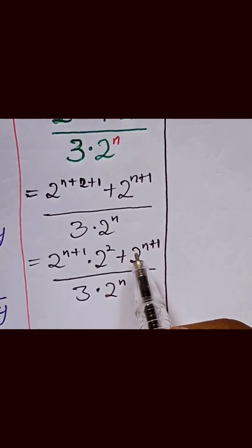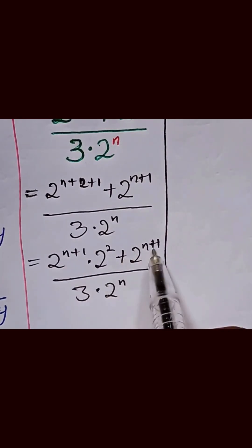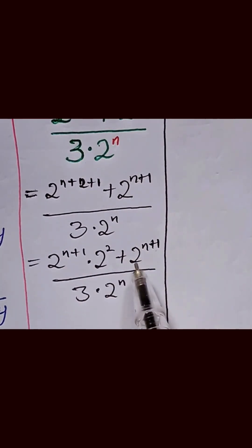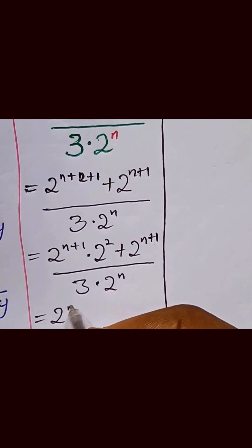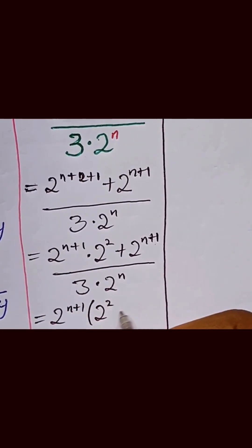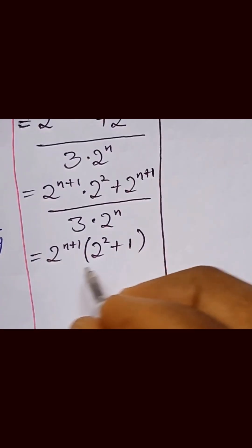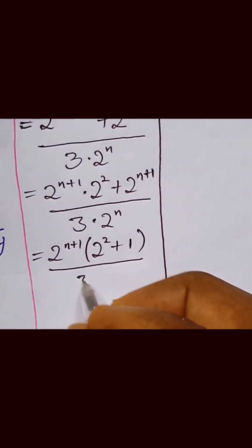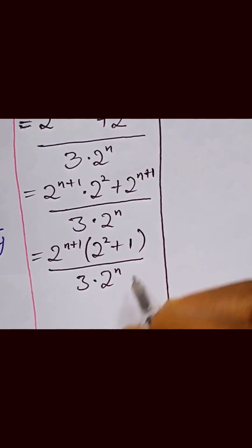Here we have 2 raised to power n in both terms, so we can factor it out. We get 2 raised to power n plus 1 into bracket 2 raised to power 2, plus 1 over 3 multiplied by 2 raised to power n.